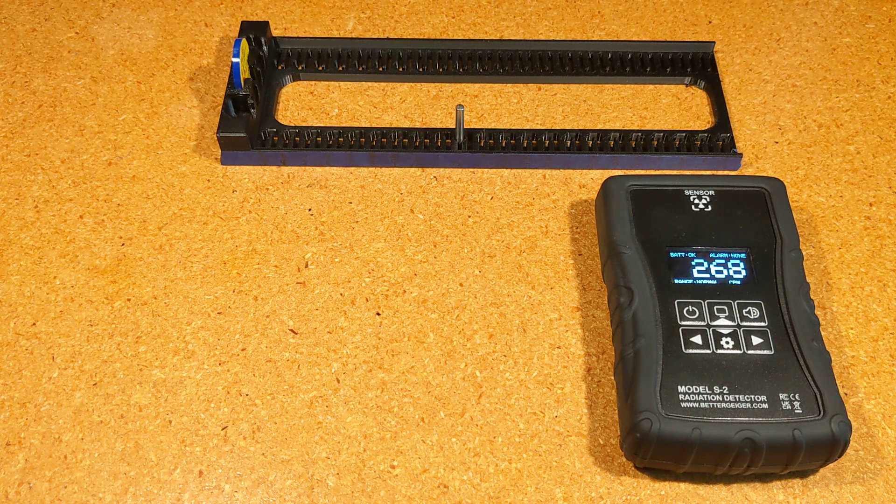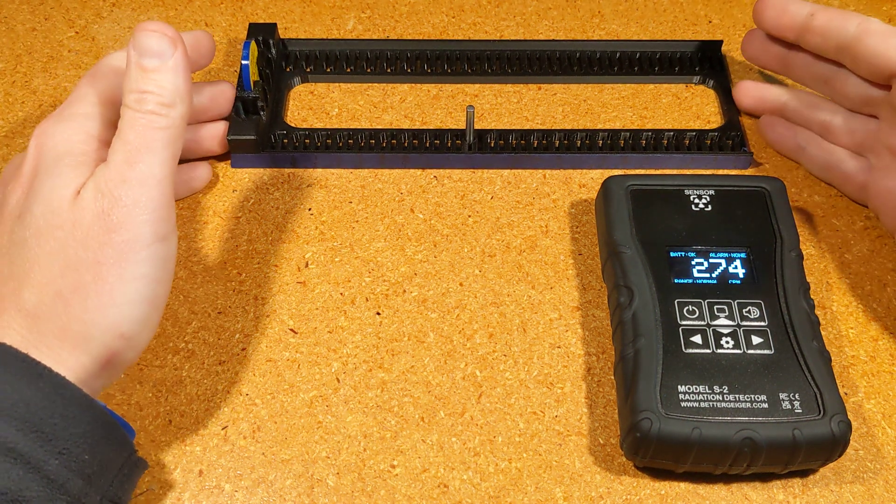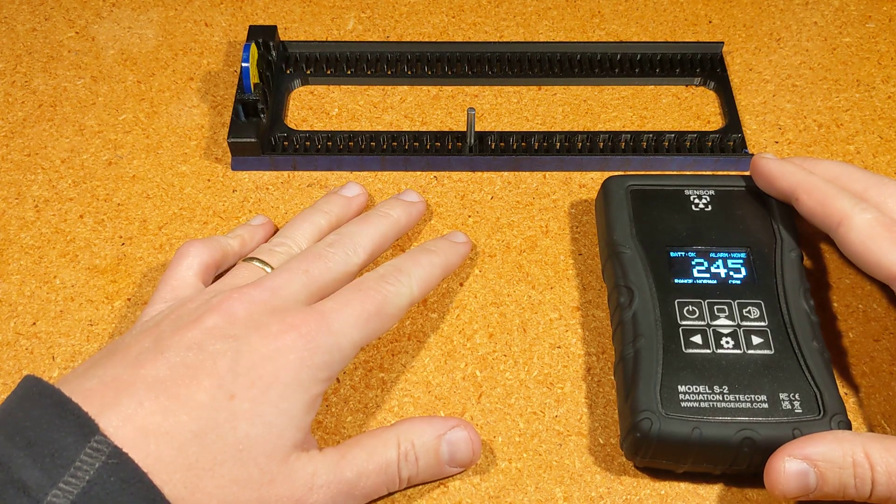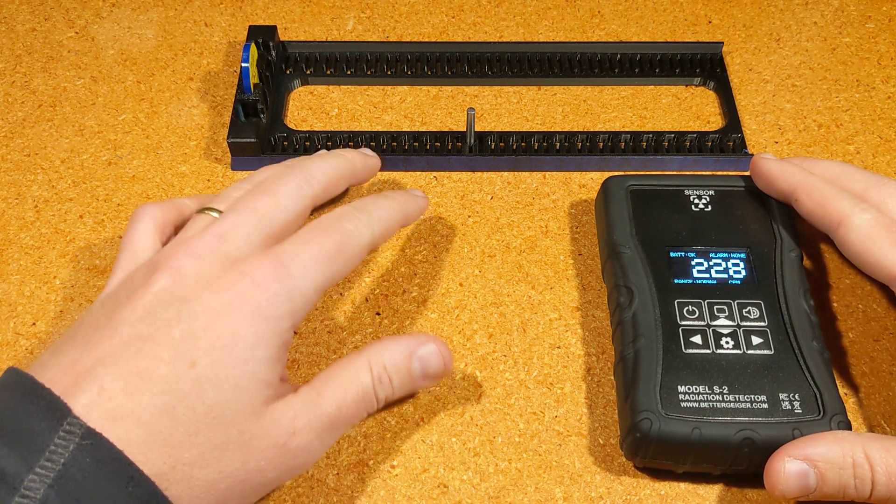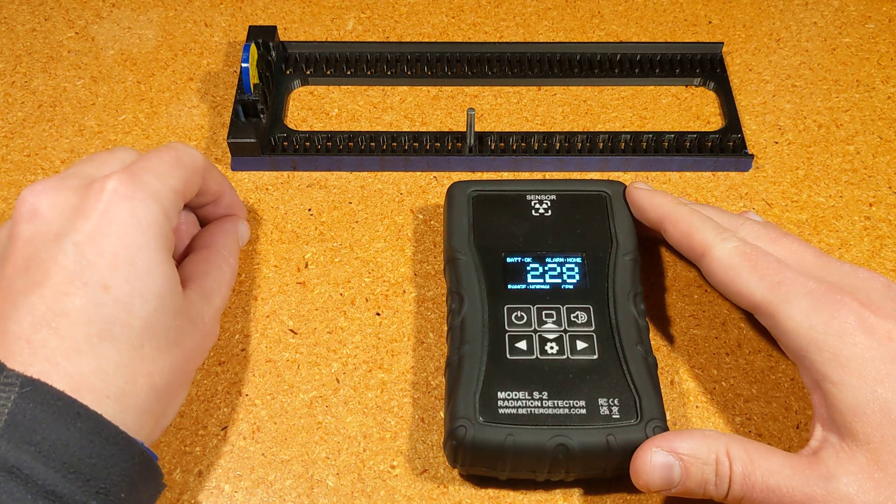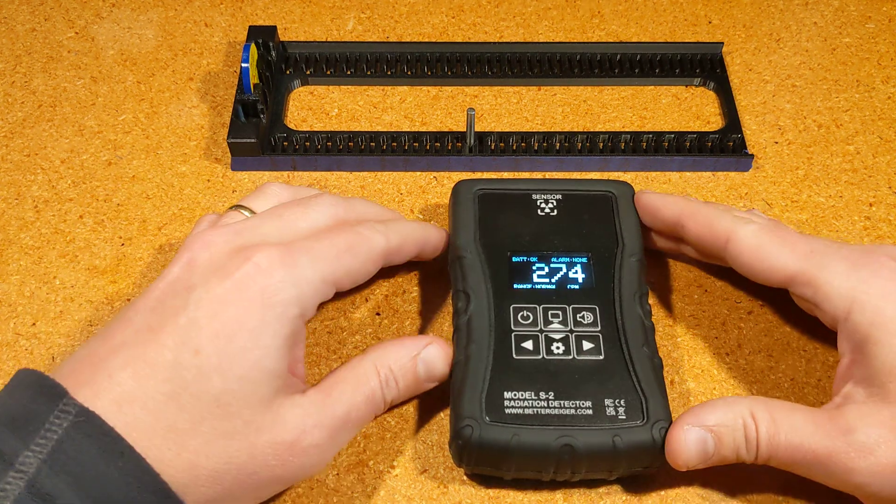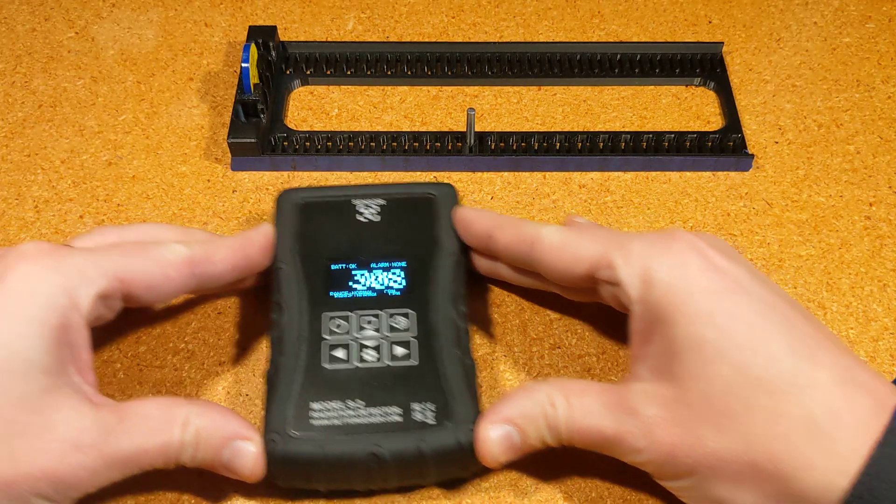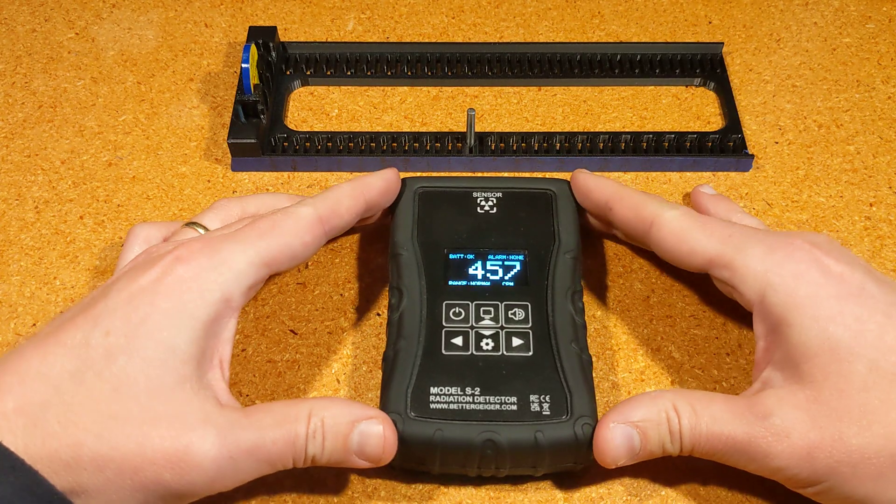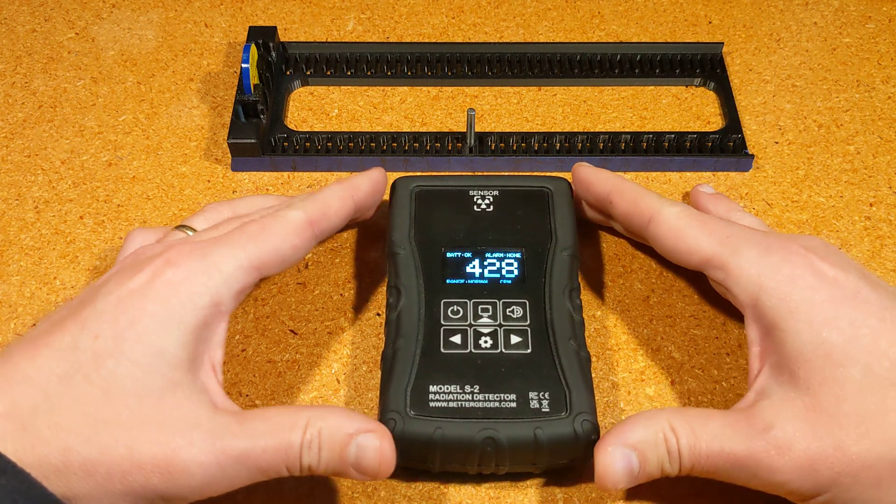Hi, this is Robert with Better Geiger. Today I'm going to make a quick video explaining some basics of using a radiation detector that some people are not familiar with. Specifically, I'm going to talk about measurement position - where you put a detector near a source or an object, what that means in practice, and what you should be aware of and understand.